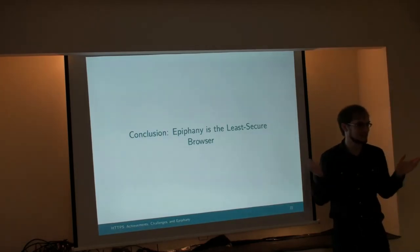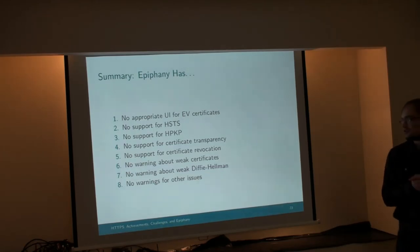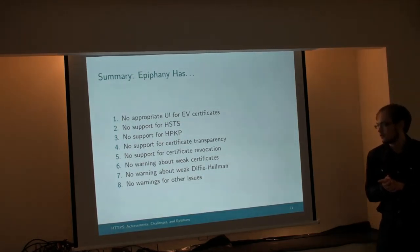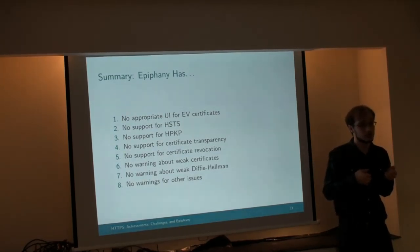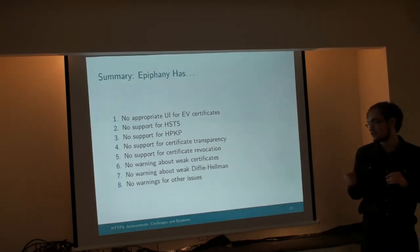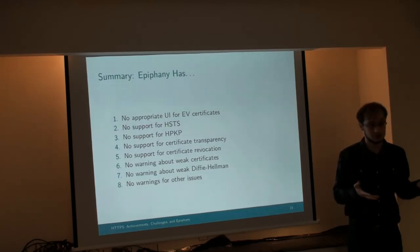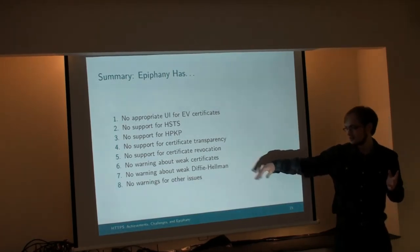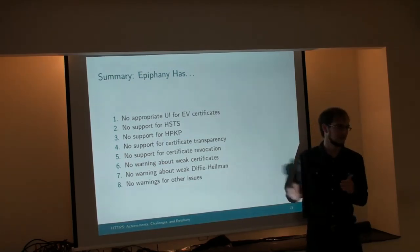Conclusion: Epiphany is the least secure web browser, at least with respect to TLS, by far. We have a huge list of security features we do not support: no UI for EV certificates, no HSTS support, no HPKP, no certificate transparency checking, no certificate revocation checking, no warnings about weak certificates, and no warnings about weak Diffie-Hellman parameters. The first five are where we're really behind. If we were to start degrading our security indicator in all these situations, most websites would no longer display as secure. Users would compare to Firefox or Chrome, see the other browser says 'secure,' and assume Epiphany is broken. That's why browsers don't want to be the first to add warnings about these problems.